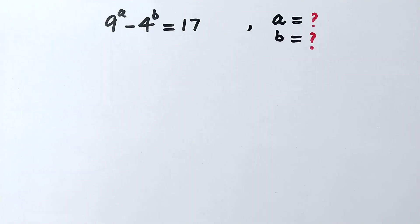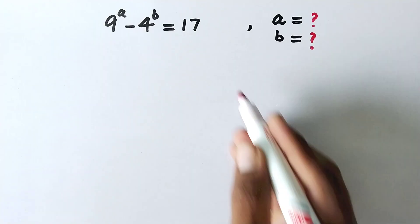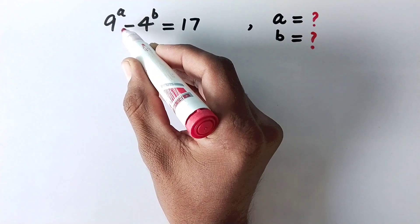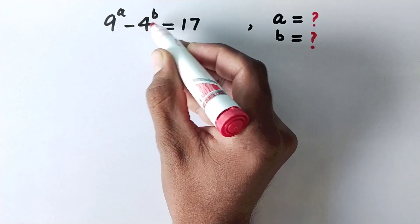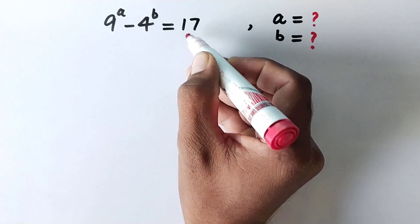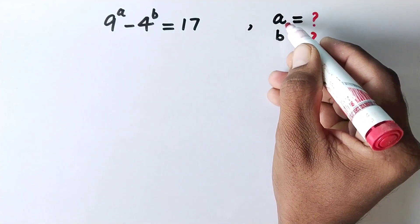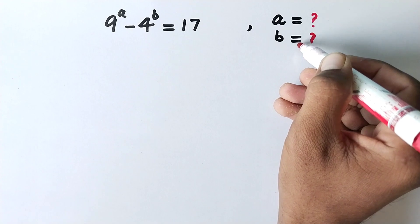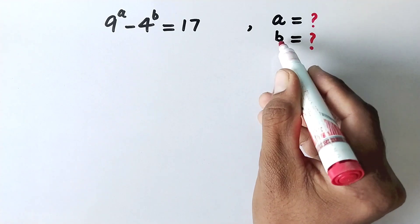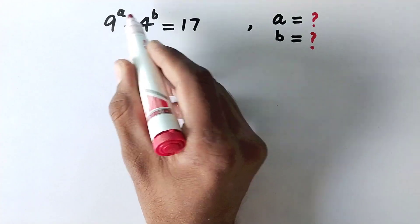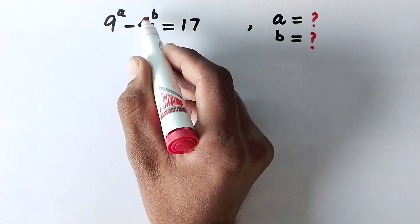Hello everyone and welcome to Explored Maths. Today we have to solve the question: 9 raised to power a minus 4 raised to power b is equal to 17. We have to find the value of a and b, where a and b are integers.